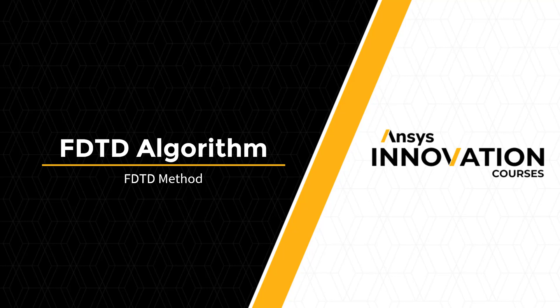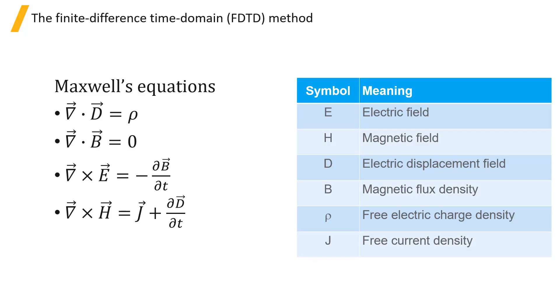The FTTD method — the Finite Difference Time Domain method — is used to solve Maxwell's equations in the time domain. The equations are solved numerically on a discrete grid in both space and time, and derivatives are handled with finite differences. It does not make any approximations or assumptions about the system, and as a result, it is highly versatile and accurate. Since it solves for all vector components of the electric and magnetic fields, it is a fully vectorial simulation method.